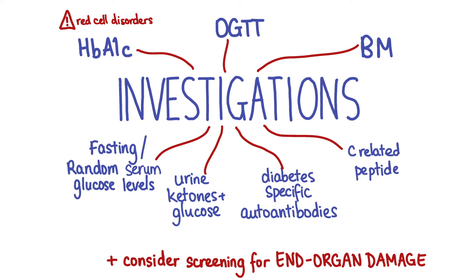Investigations that may help in the diagnosis of diabetes include HbA1c, which is a measurement of average glycemic control over the lifespan of a red cell at about three months; BMs, a quick bedside test used to measure glucose levels in the blood; fasting and random glucose levels; or an oral glucose tolerance test in suspected gestational diabetes or when other investigations are inconclusive. In suspected DKA you would also measure urine glucose and ketone levels, and may consider testing for C-peptide, which would be reduced in type 1 diabetes, and diabetes-specific autoantibodies.